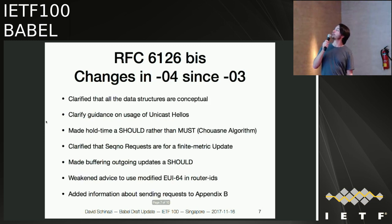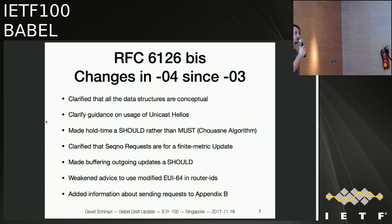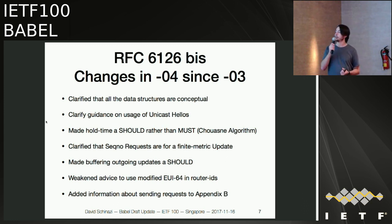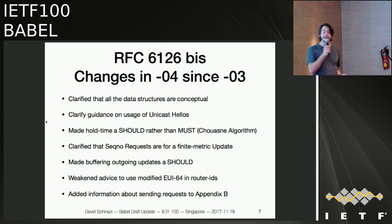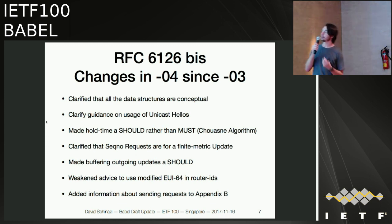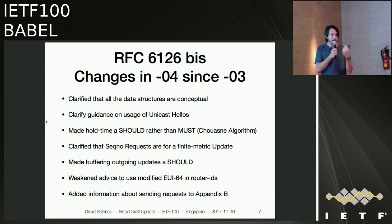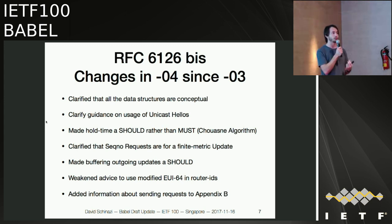For those paying closer attention, I'll quickly go through the changes between draft .03 and .04. Clearly the most important change is that I'm now a co-author — but apart from that, things that actually matter: we clarified a few things. There was some confusion on the list about some of the data structures. One of the really important things about Babel is that it only specifies the minimum of what needs to be specified to work really well.